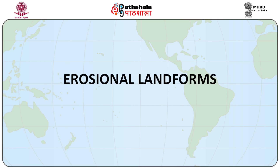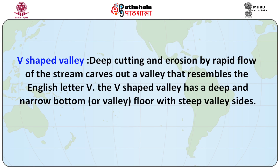The above discussed processes, coupled with other factors, give rise to diverse landforms occurring in different parts of the stream course. We will take up erosional landforms first. V-shaped valley: deep cutting and erosion by rapid flow of stream carves out a valley that resembles the English letter V. The V-shaped valley has a deep and narrow bottom floor with steep valley sides. The shape is an outcome of a number of factors at interplay. Mass movement and weathering of rocks are effective in shaping the valley.